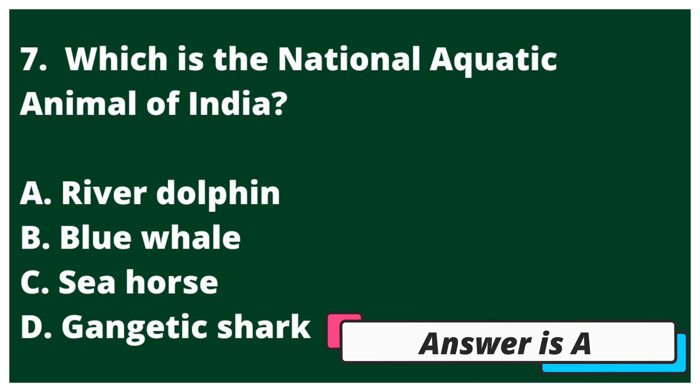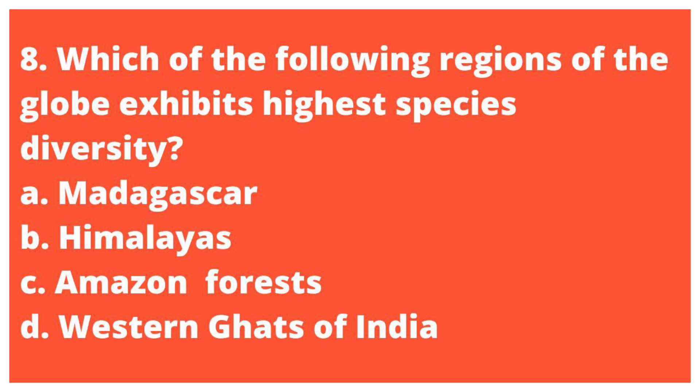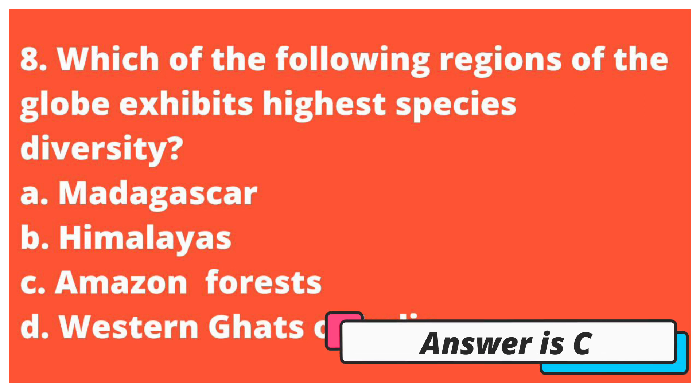Eighth question: Which of the following regions of the globe exhibits the highest species diversity? Option A, Madagascar. Option B, Himalayas. Option C, Amazon Forest. Option D, Western Ghats of India. The correct answer is Option C, Amazon Forest.